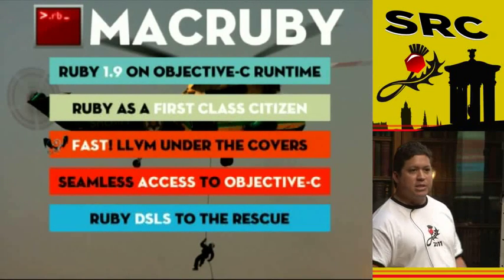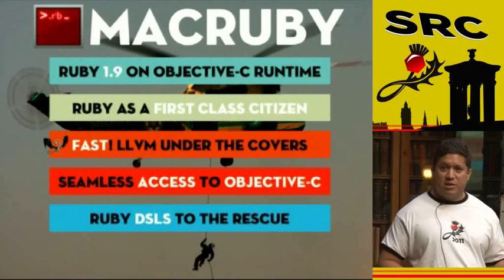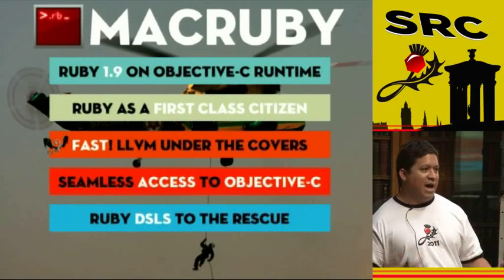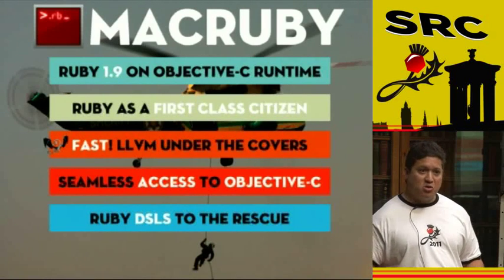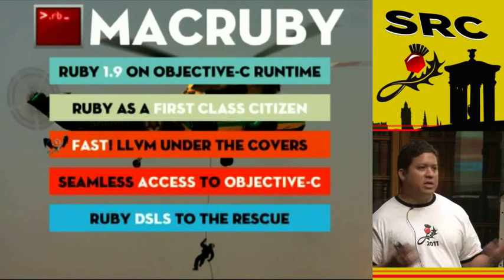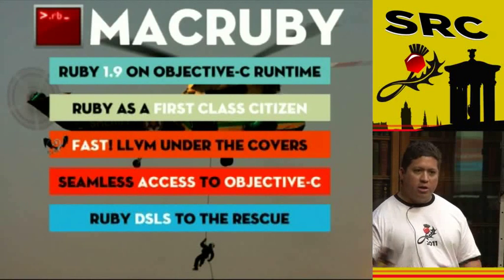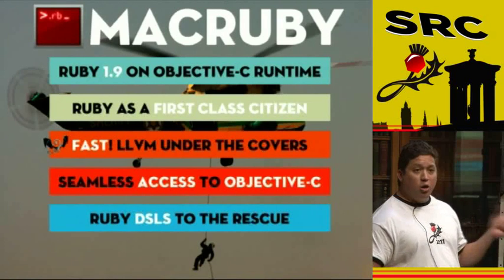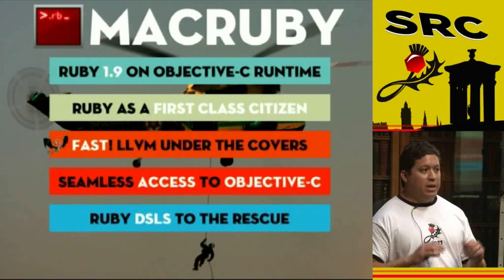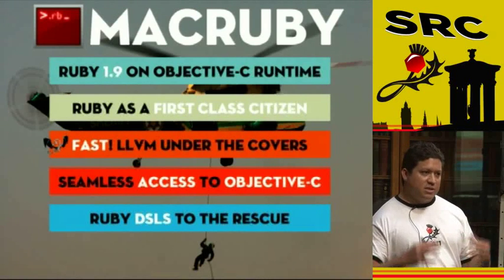MacRuby is just another Ruby that happens to run on the Objective-C runtime. Apple is the sponsor of MacRuby — it's not a third-party organization trying to jerry-rig something into the platform. There's full Apple support behind MacRuby. It's a Ruby 1.9 implementation, which is great news for those of us dealing with 1.8.6, 1.8.7, and 1.9.2. MacRuby started on the 1.9 branch. One of Apple's goals is to make MacRuby a first-class citizen of the platform, living side-by-side with Objective-C.